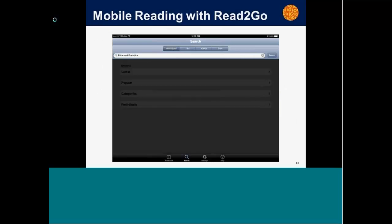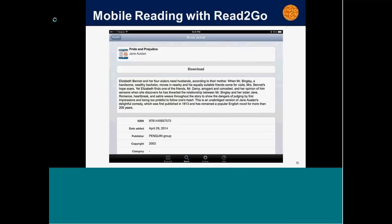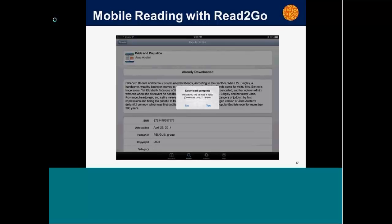With Read2Go, I've gone through a step-by-step series of screenshots to show you every step. This is the search page — I've gone into the search bar where I can choose to search by author, title, ISBN, and so on. I've typed 'Pride and Prejudice' and get a list of results. I choose one to download and see more information about that particular one. When I click the Download button, I'll see it's in the process of downloading. When it's done, it will ask if I'm ready to read it right now. If I click No, the book stays on my bookshelf for later. If I'm ready now, I click Yes and open the book in the app.